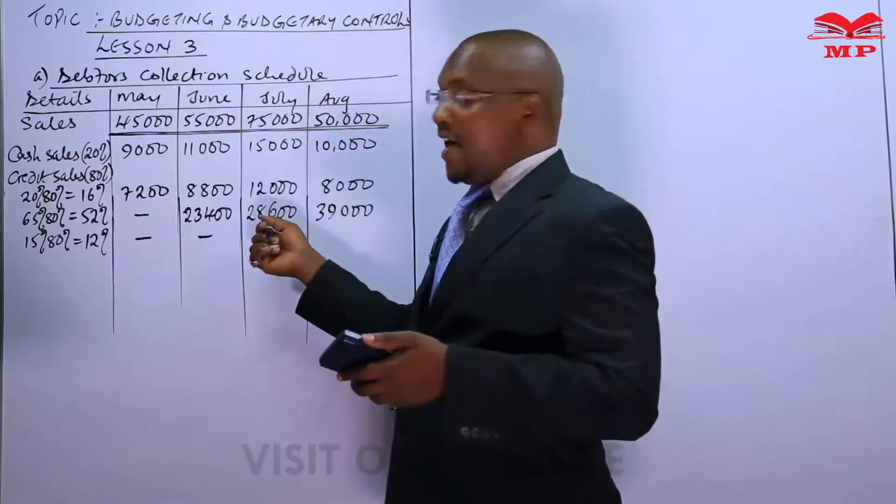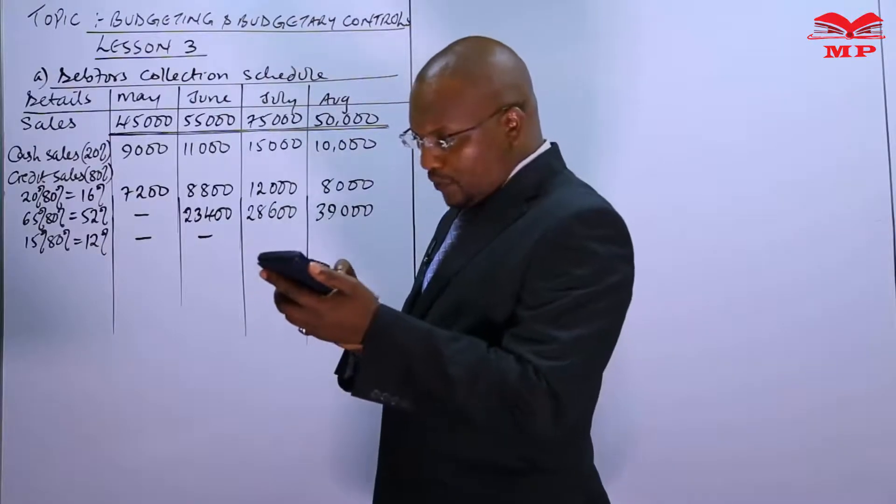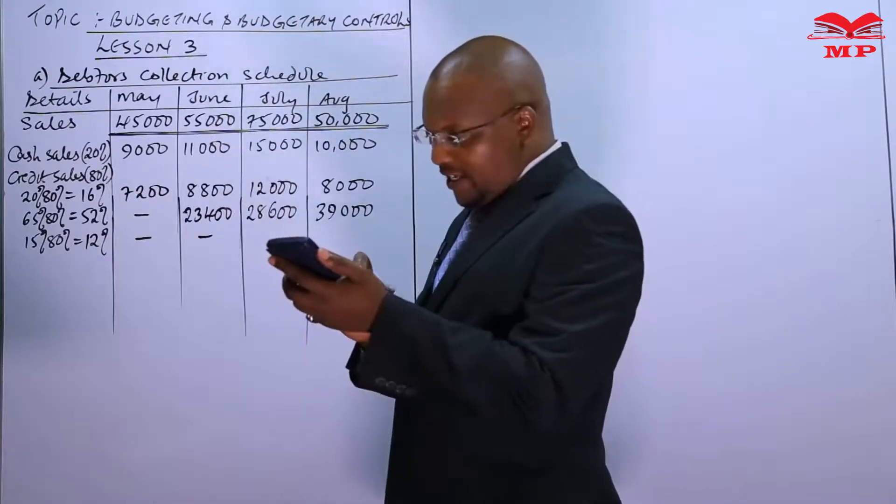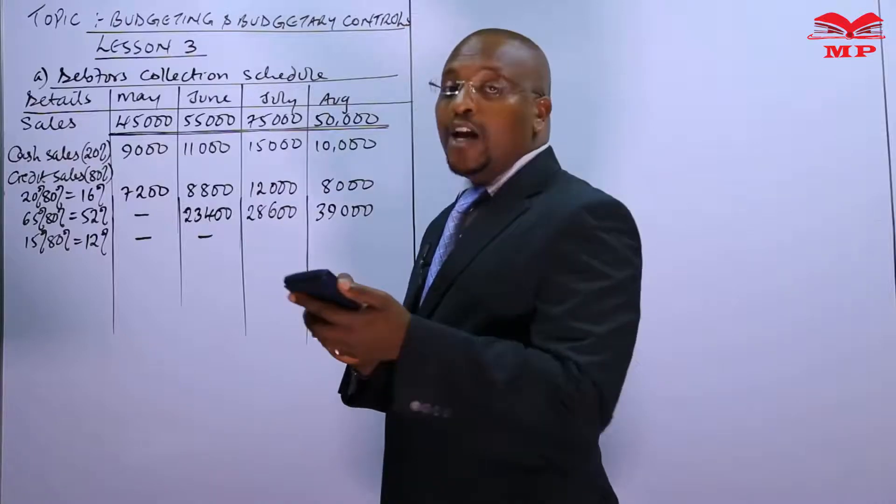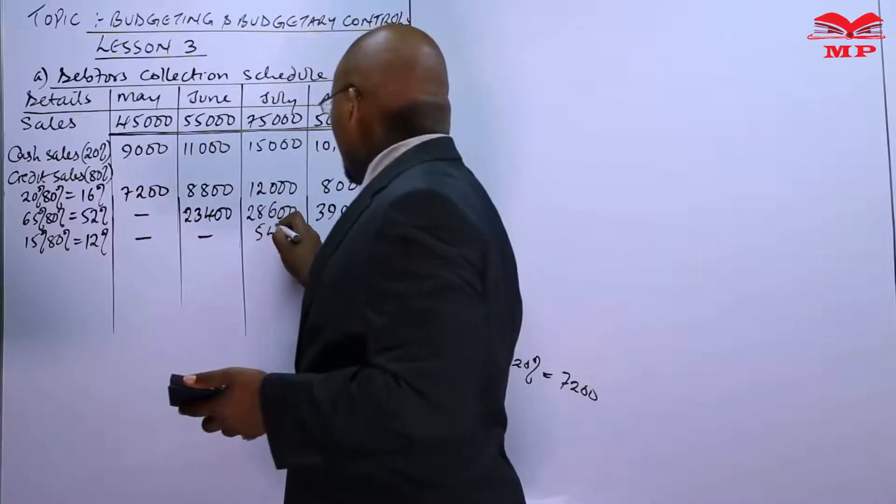So therefore, the 0.12 of 45,000 in the month of May sales will be collected in July, 5,400.